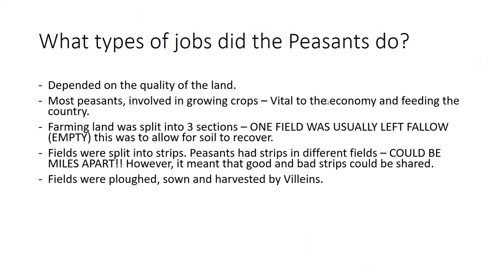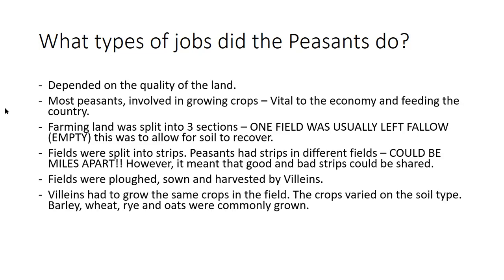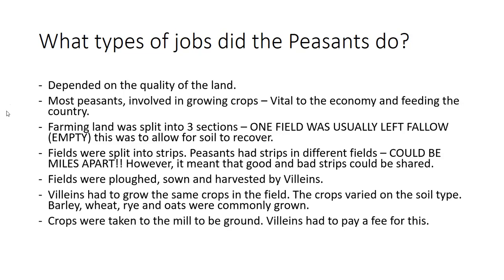The fields were ploughed, sown, and harvested by the villeins — they were dug up, derooted, seeds were planted and then harvested. Villeins had to grow the same crops in a field, which varied on soil type. The most common crops grown in medieval England were barley, wheat, rye and oats. Crops were taken to the mill to be ground and the villeins had to pay a fee for this — so after harvest they had to pay to have their crops ground to help feed their family.